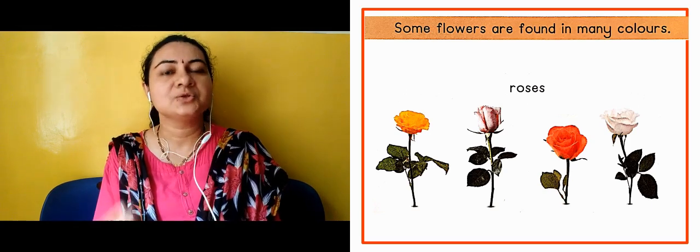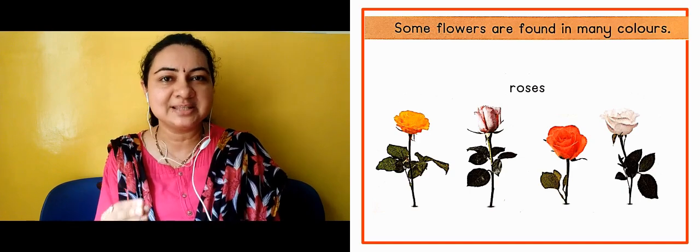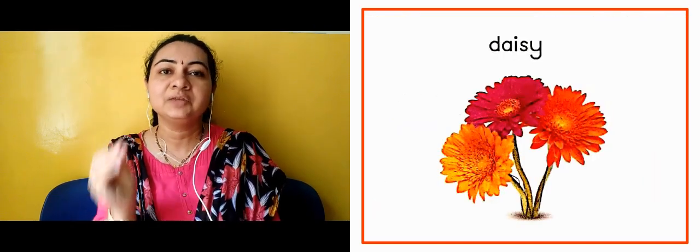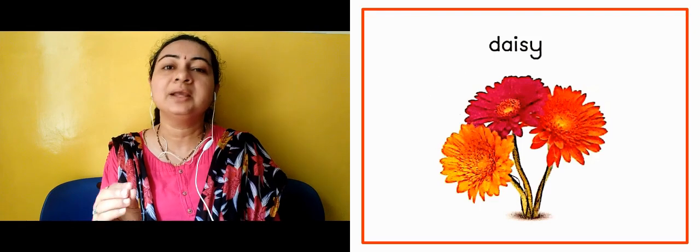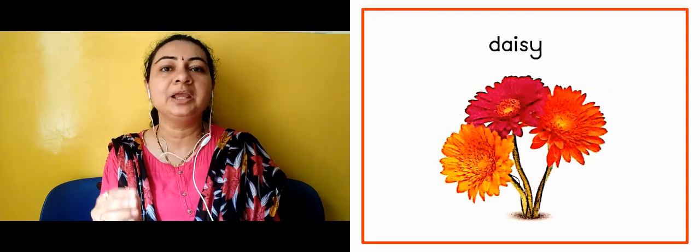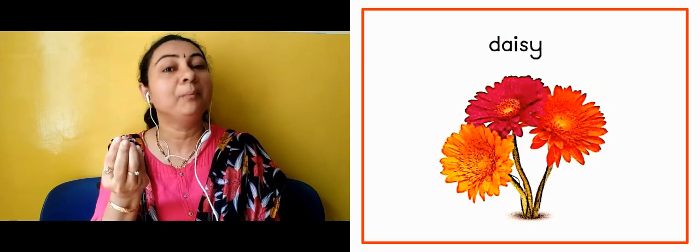So next, we have seen daisy in different colors. This one is a flower bouquet — this bouquet looks very good. So which color is the daisy? Yellow, red, orange.